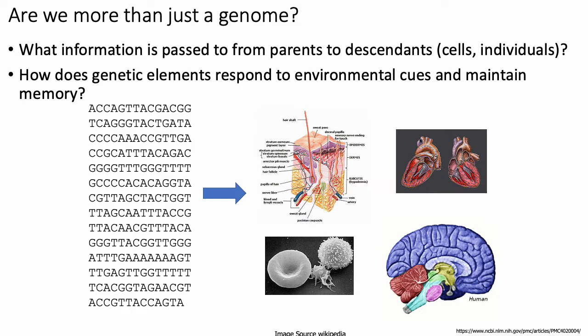One question is what information gets passed between parents and their descendants. This question of transgenerational inheritance of information can be studied at multiple levels — what gets passed between parent cells and daughter cells, or how information gets passed between whole individuals when they mate and produce progeny. Epigenetics is also used to study how genetic elements respond to different environmental cues, and what mechanisms the cell can use to integrate information from both DNA and environmental cues in order to change gene regulation.